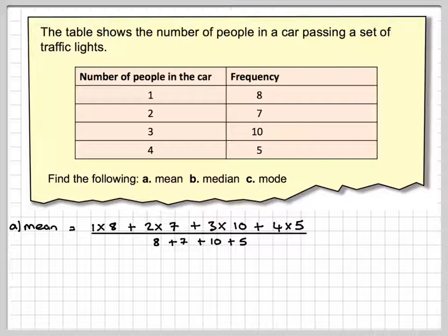Working out on my calculator carefully, I'm going to get 72 divided by 30. 72 divided by 30 is 2.4.